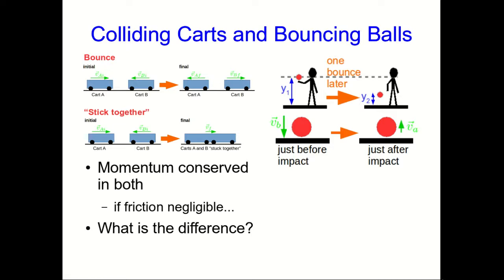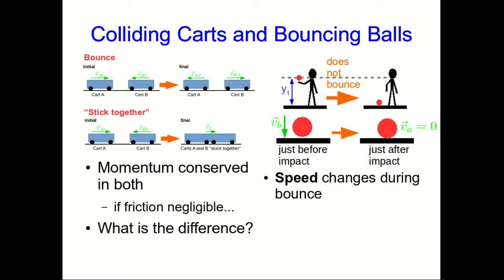And then the most extreme case is something like, well not a ball, but a bean bag where you drop it and it just goes splat and its speed after the impact is zero. So depending apparently on perhaps the nature of the interaction between the ball and the ground, the speed can change during the bounce by different amounts.